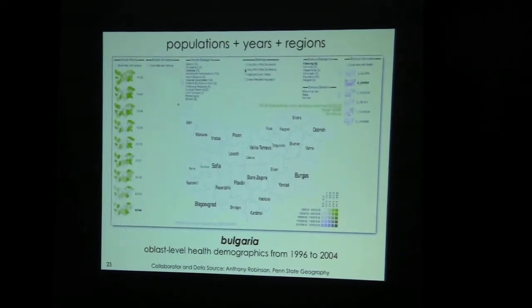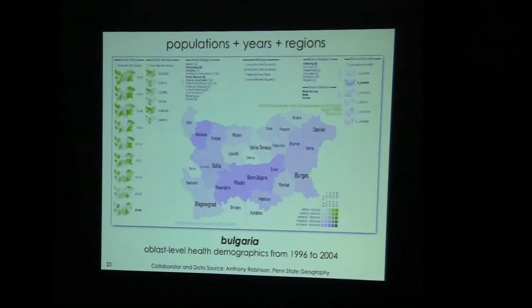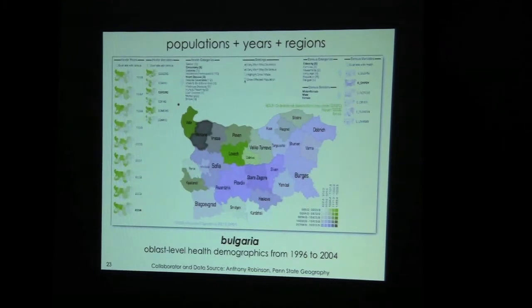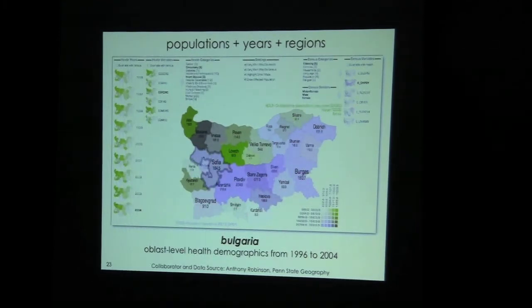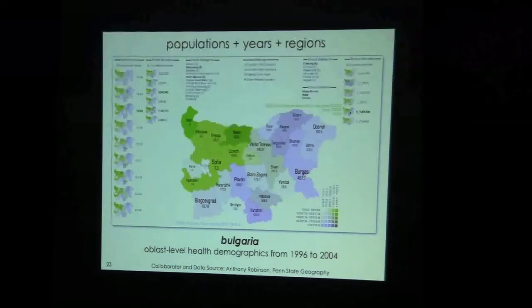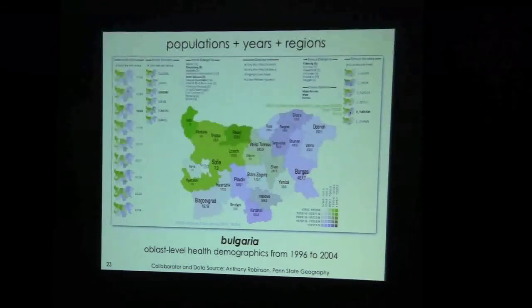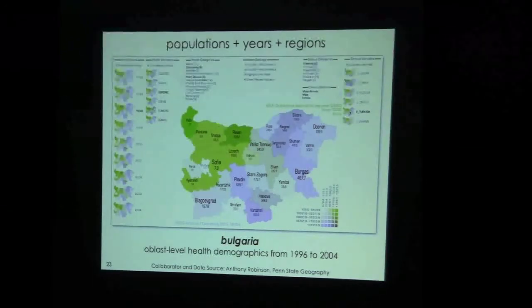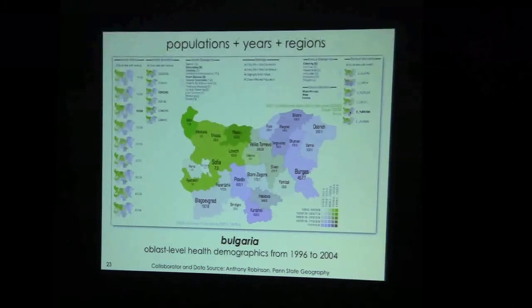Let me show you a few examples. Here's an example of health data from Bulgaria. Anthony Robinson visited the health ministry and they handed him a CD with basically all of their health data for 12 years, aggregated at the level of individual oblasts. In this particular tool you can pick a year, a category of health variables, a particular health variable, do the same for census variables, and then see the bivariate pattern for the health variable versus the census variable over space. This ability to quickly explore the set of different variables in your dataset and explore over time allows you to ask particular questions about combinations of variables quite quickly.